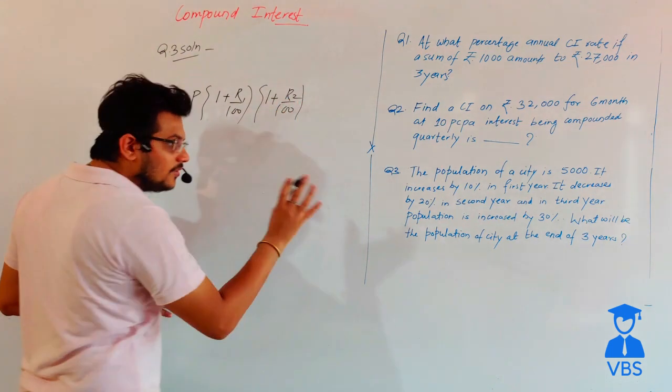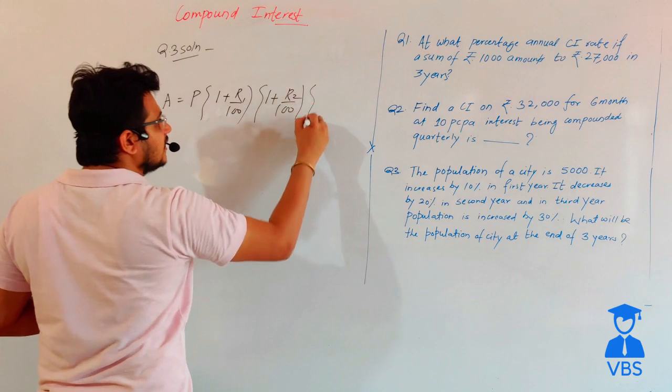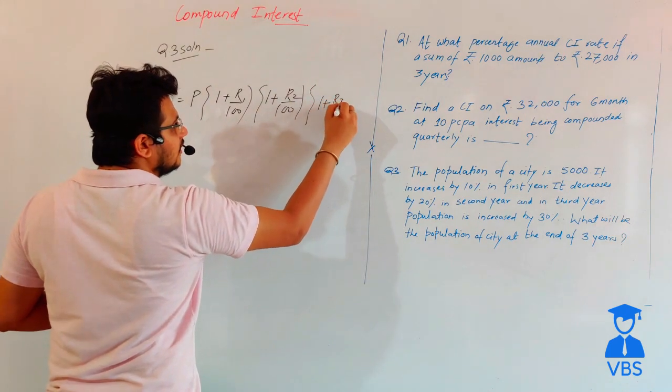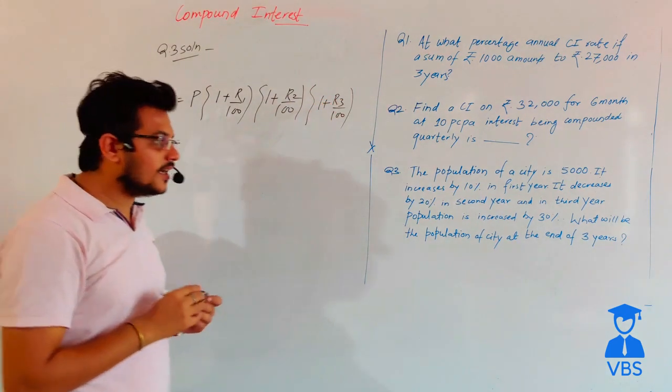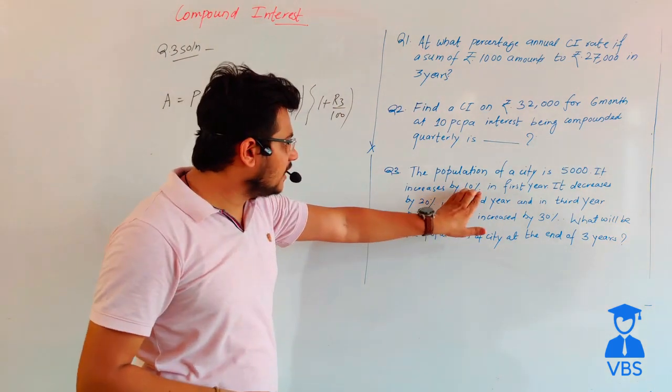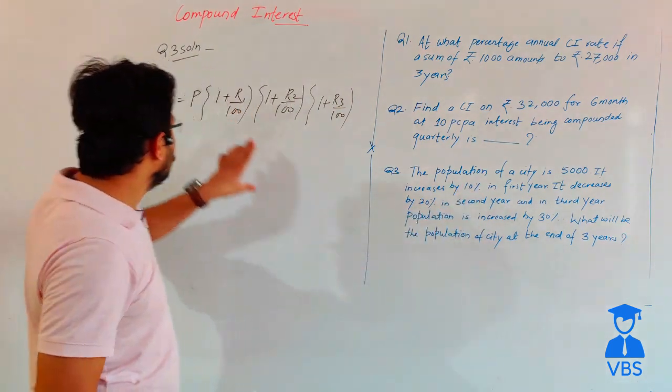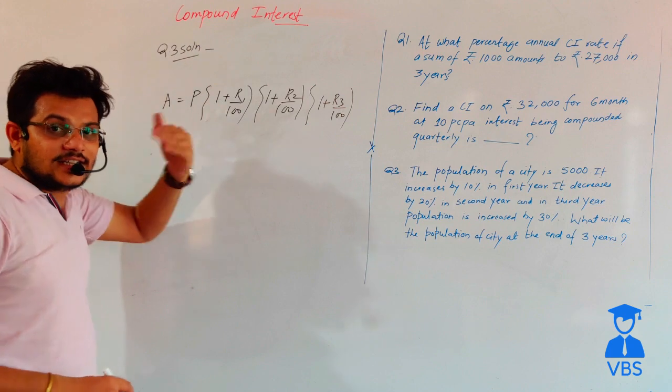For three years, we add the factor (1 + R3/100) for the third year's increase. Each year's rate compounds on the previous population.